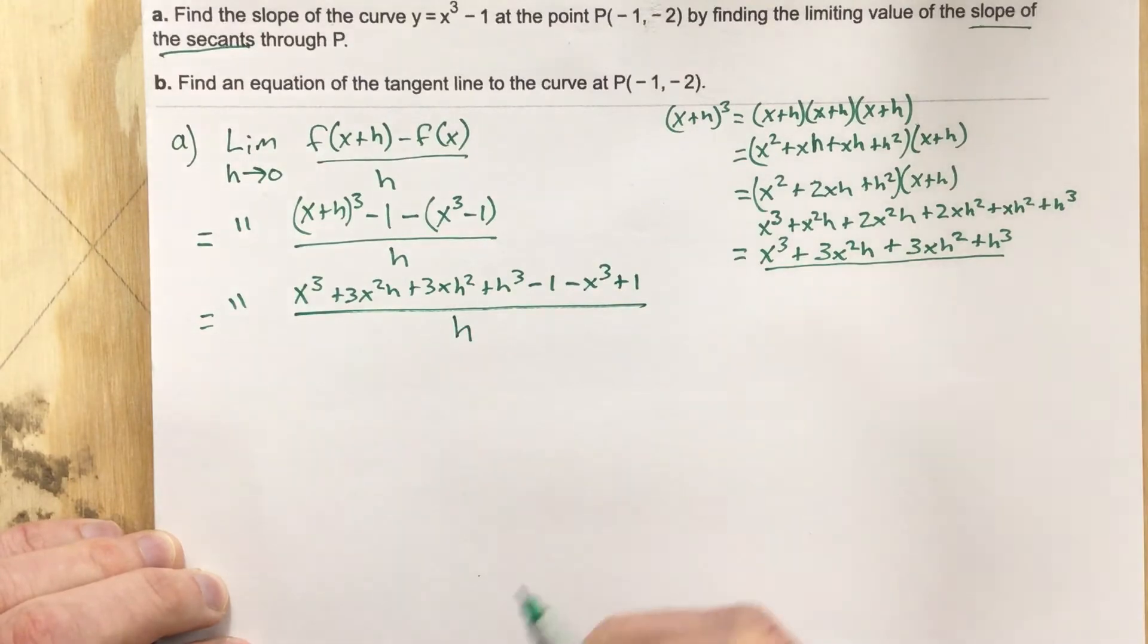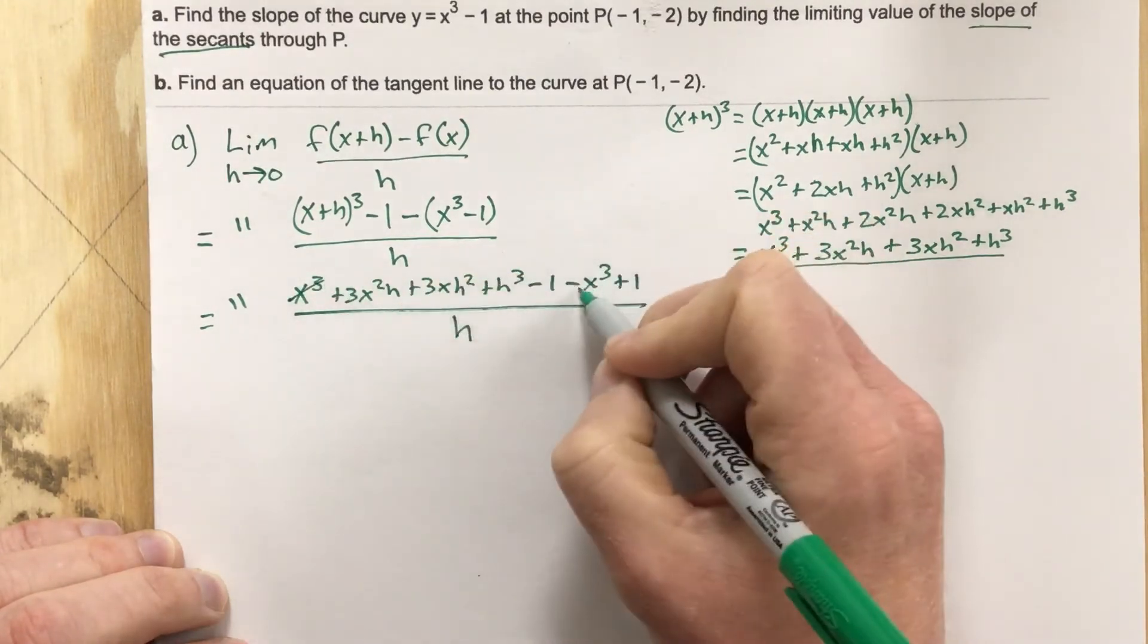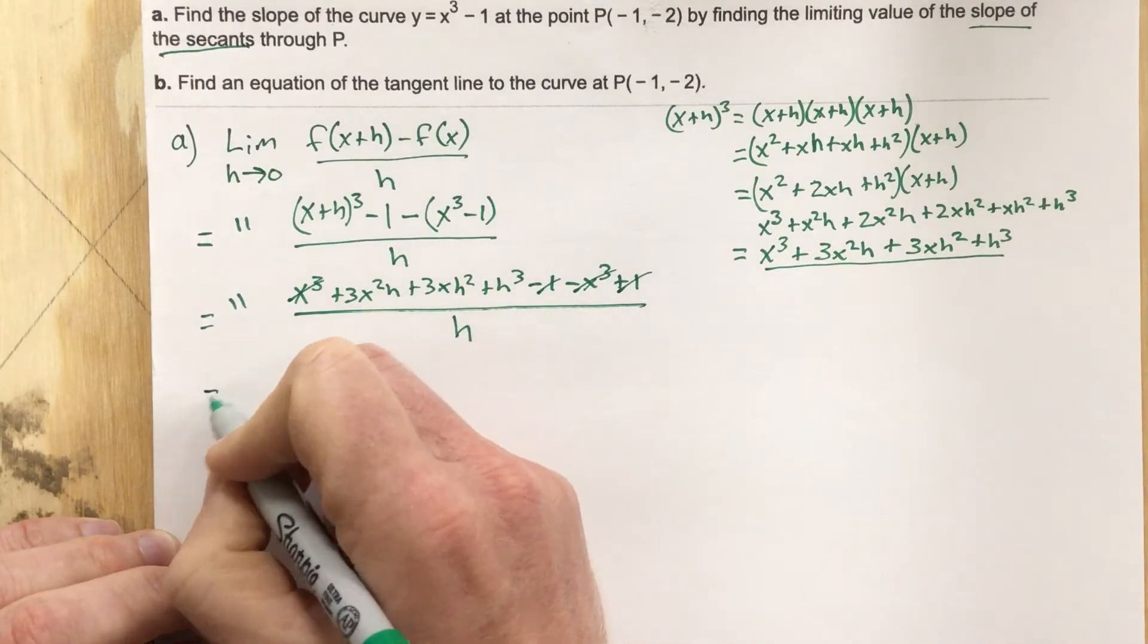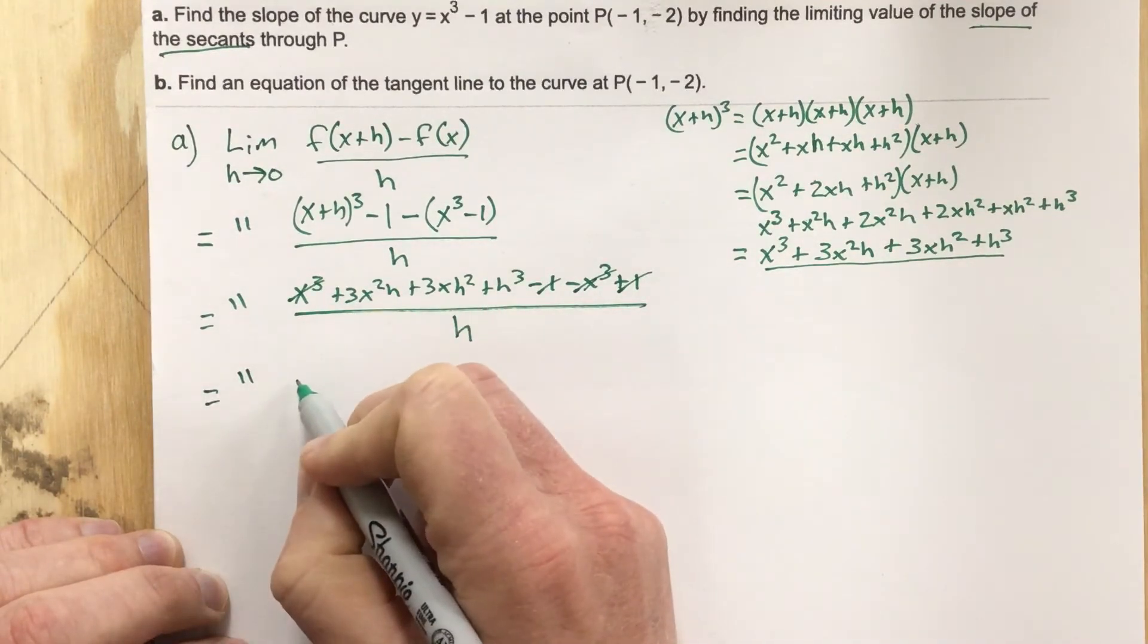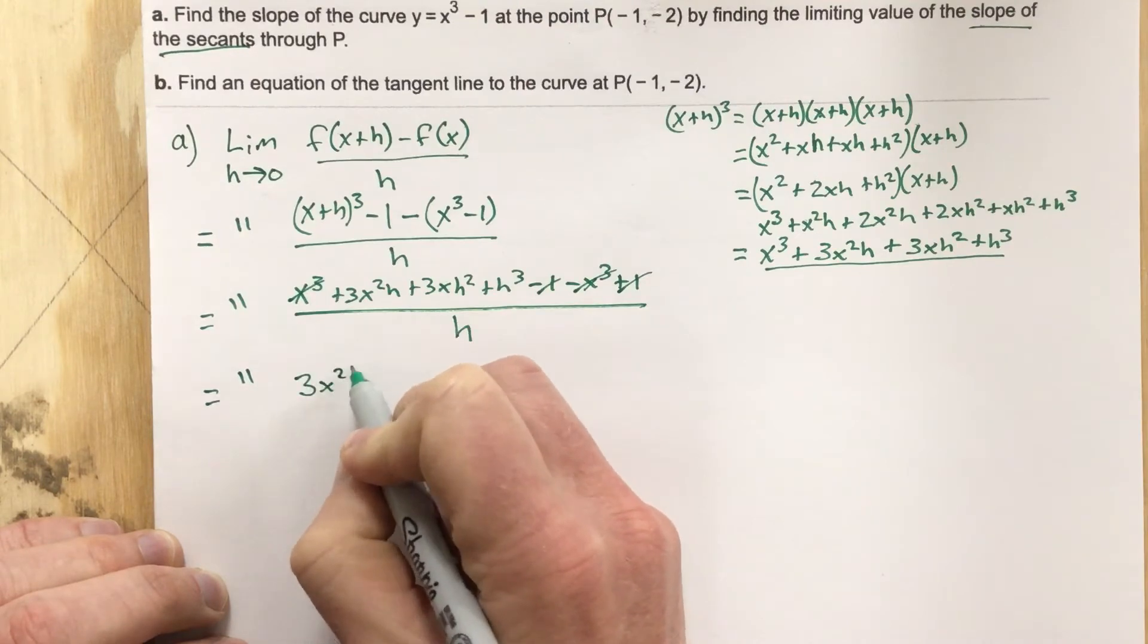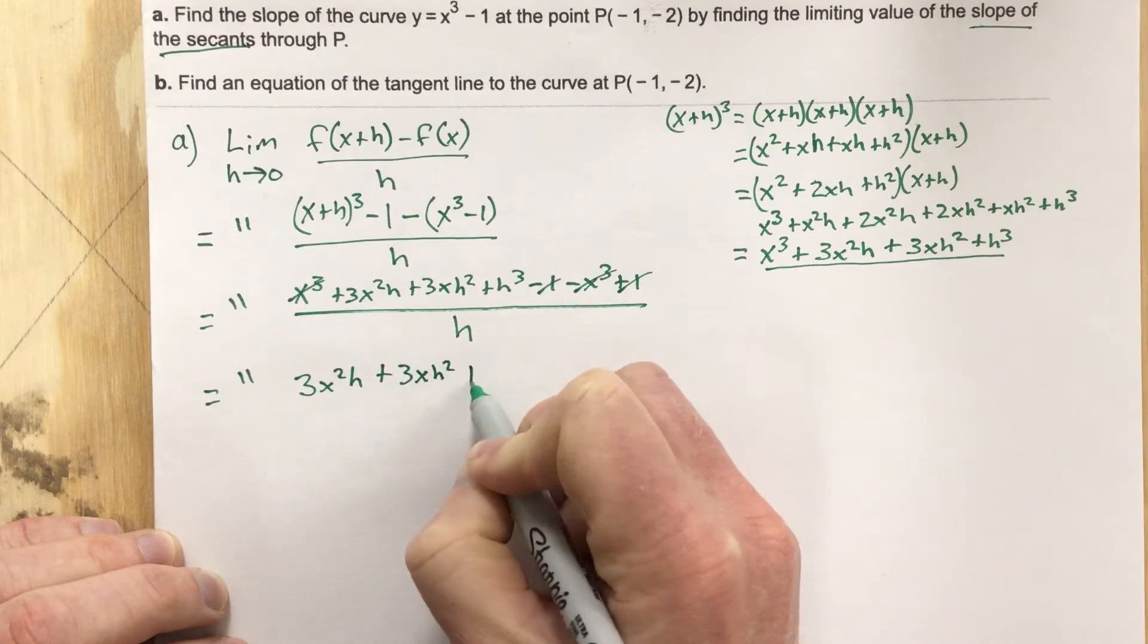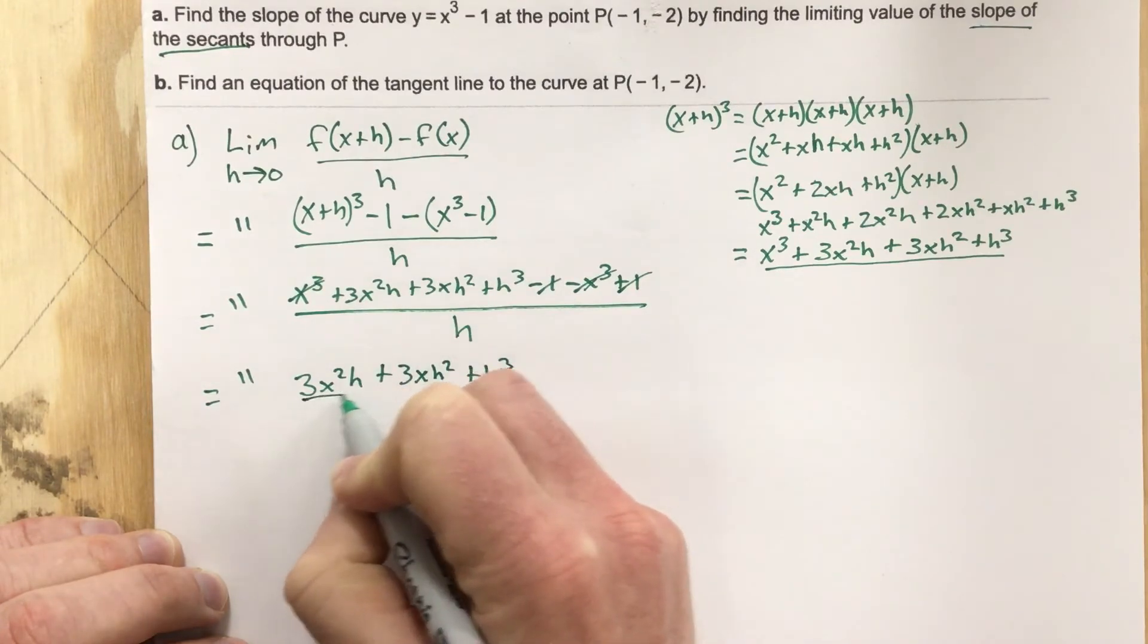Let's cancel some stuff out here. We got x cubed canceling with negative x cubed, negative 1 canceling with 1. We're left with just those three terms on top. So we have 3x squared h plus 3xh squared plus h cubed all over h.